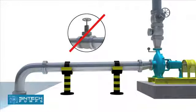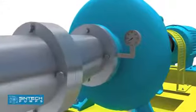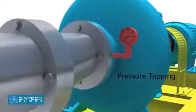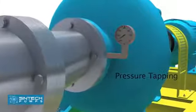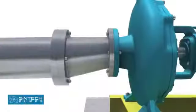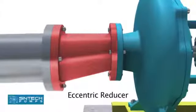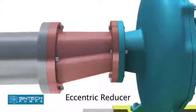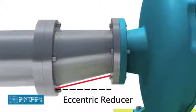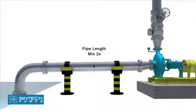No isolation valve is recommended. There should be a tapping provided for installing a vacuum gauge in the suction line. The reducer joining the straight length of pipe in the pump line should be an eccentric reducer with the inclined side as the bottom side. The straight length of pipe after the eccentric reducer should be 2 times the pipe diameter.